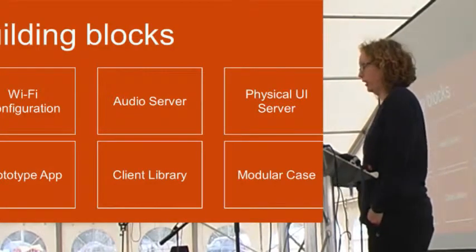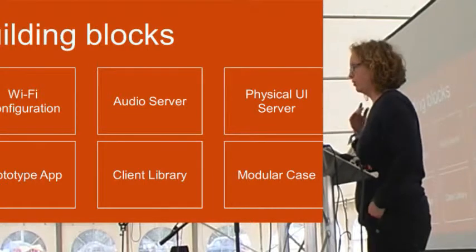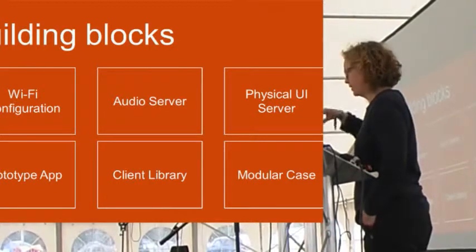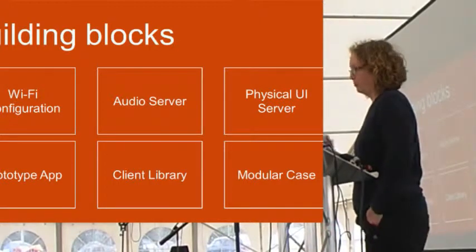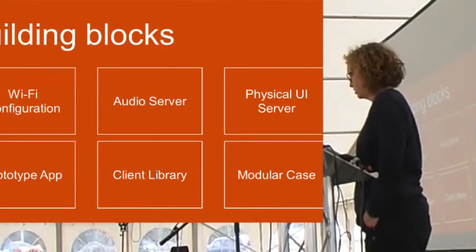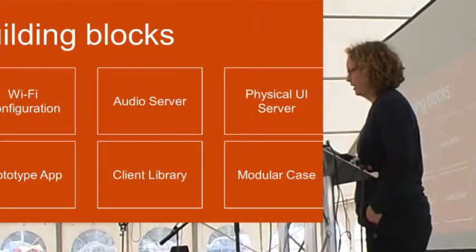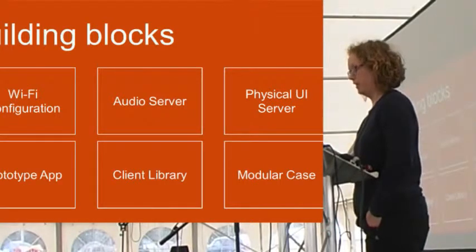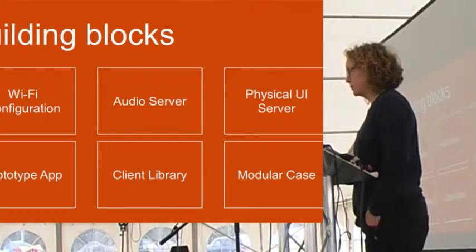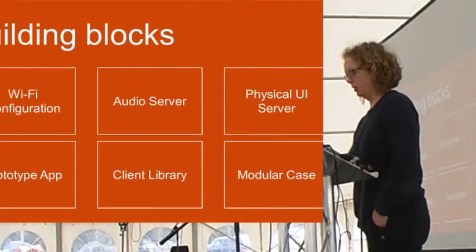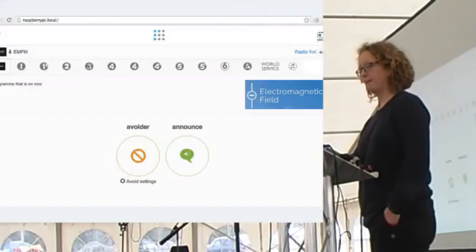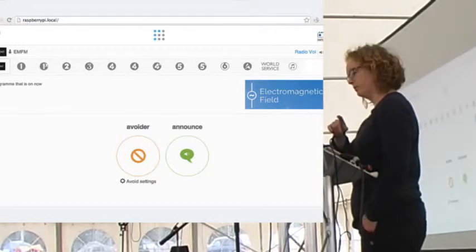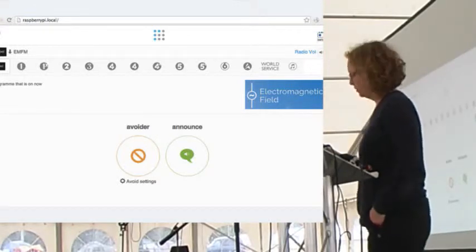So, now we've got the building blocks here. So, we've got Wi-Fi configuration to get it on there. We've got an audio server, which talks to MPD. We've got the physical UI server that enables you to configure buttons and dials and things to do what you want. We've got the prototype app, which was the magic button thing that we showed you. So, that's just one thing you could build, but it's an example of it. We've got a client library, which just interfaces between, so kind of uses the send things to RabbitMQ and back again. And we've got a modular case, and it's all open source, including the case designs and everything like that. And we're working in the open from the beginning. So, it's now in sufficient state such that a bodger like me can add in EMFM into there, because it's just an internet stream, and we can listen to it on the radio.